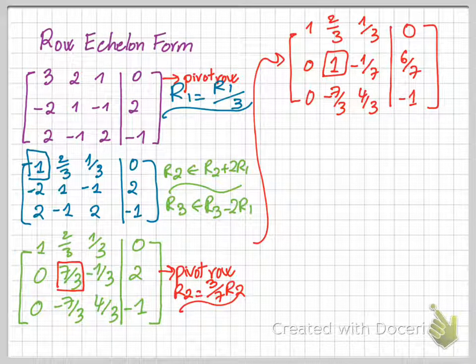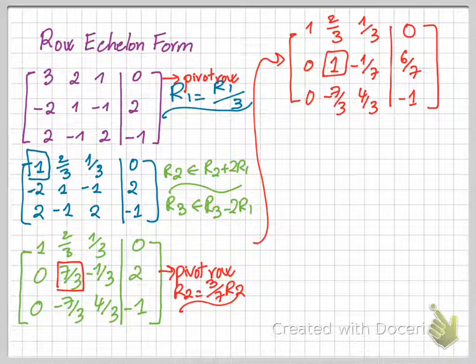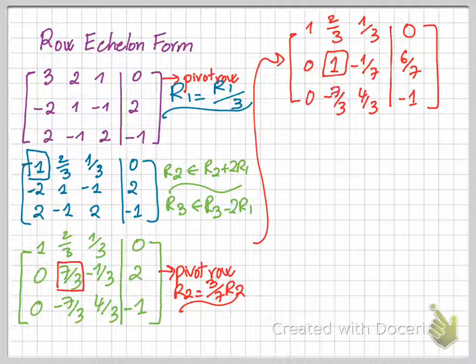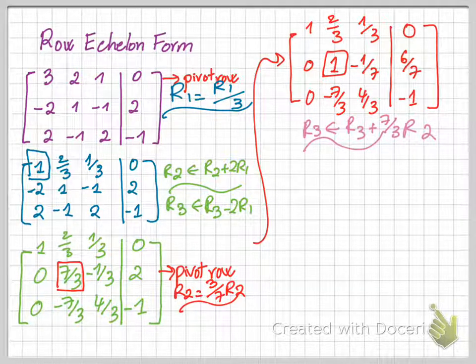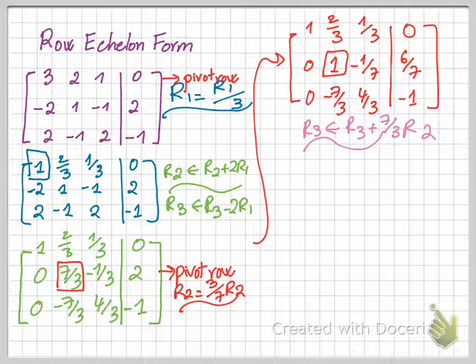And then again, you want to use this pivot row here to transform the third row so that this value here, right under the pivot position, is gonna be 0. So if you're gonna use another row operation, you want to transform row 3 by taking row 3 plus 7 over 3 row 2, which is the pivot row.